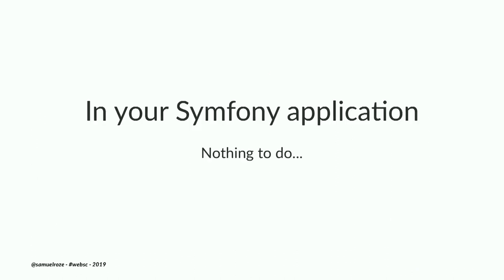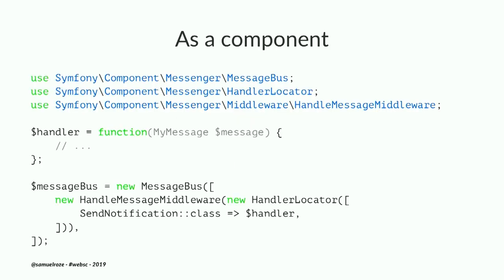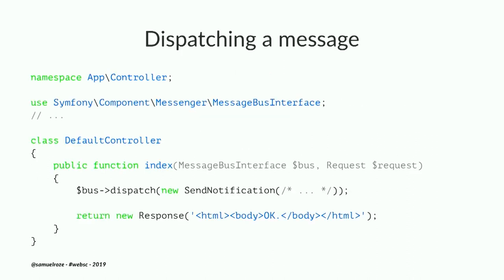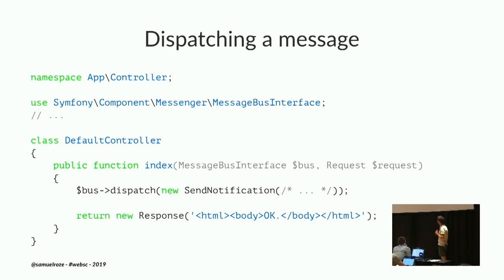To use the SendNotification message, you inject the MessageBusInterface into something — here into a controller action — and then call `$bus->dispatch(new SendNotification(...))`. Does the syntax of injecting services into the action make sense? It's quite new actually. So these are just the important parts.